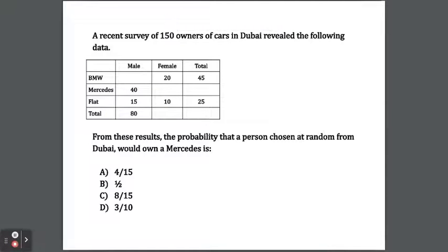A recent survey of 150 owners of cars in Dubai revealed the following data. We're going to fill in the table. The total number of BMWs is 45, and we fill in 25 for another entry. The total number of cars surveyed is 150. We think of a number to add with the given values to give 150, which is 80. Then we find a number to add with 40 to get 80, which is 40. Similarly, a number added with 80 gives 150, which is 70.